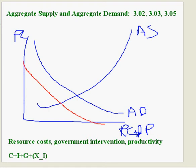Those are the things that shift aggregate demand and aggregate supply. There is a separate video on 3.05 that shows you how to draw your graphs, but this basically just tells you what causes the changes in aggregate supply and aggregate demand. Hope you have a great day.